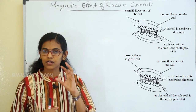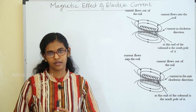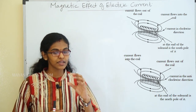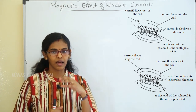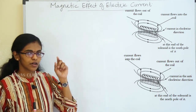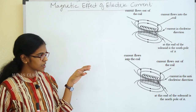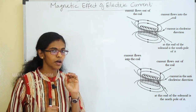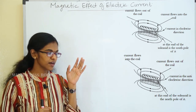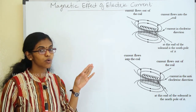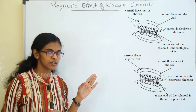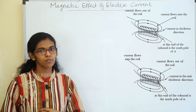If the current flow is in the anticlockwise direction, this end is the north pole. In the second figure, there is a current flowing out at that end. If we find the current flow is going in the anticlockwise direction, that end will act as the south pole.